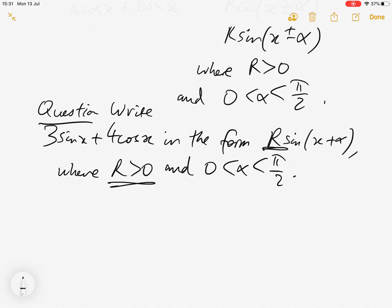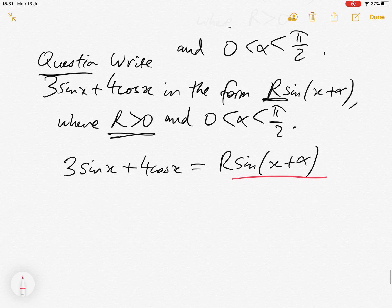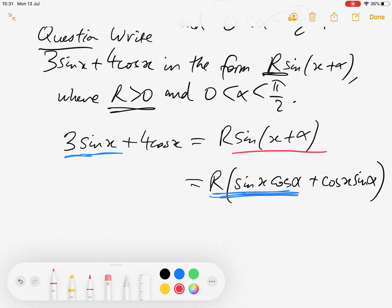Well, we want 3 sin x plus 4 cos x to be equal to r sin x plus alpha. So let's expand sin of x plus alpha. So we're going to get r sin x cos alpha plus r cos x sin alpha. And now let's just compare with this side. So here we've got a sin x, here we've got a sin x. So we need the 3 sin x to be equal to this term, r sin x cos alpha. And we need the 4 cos x to be equal to r cos x sin alpha.